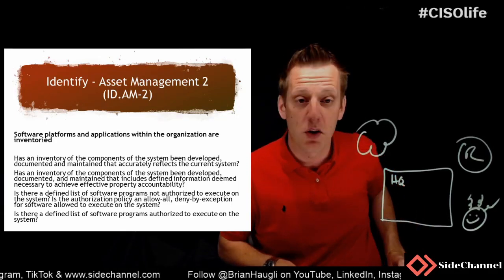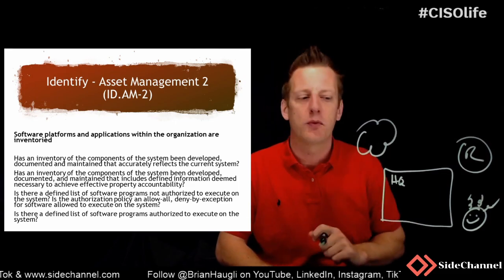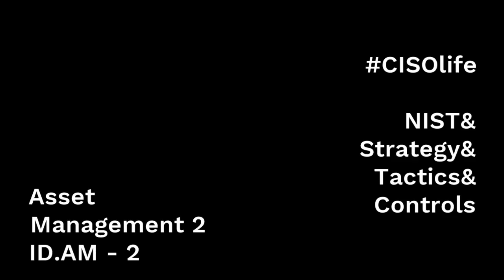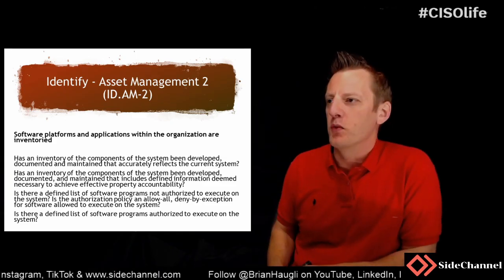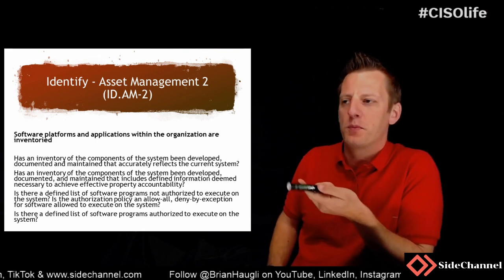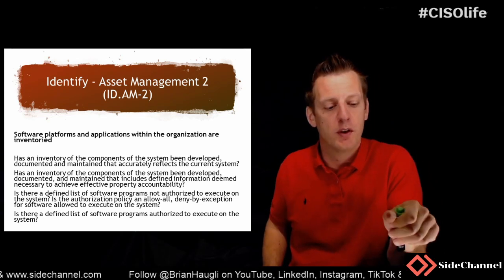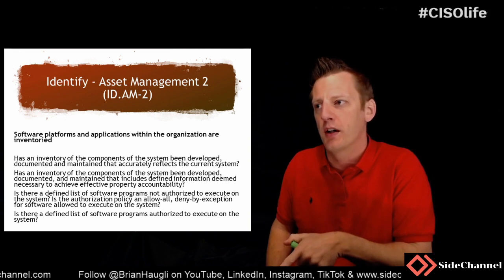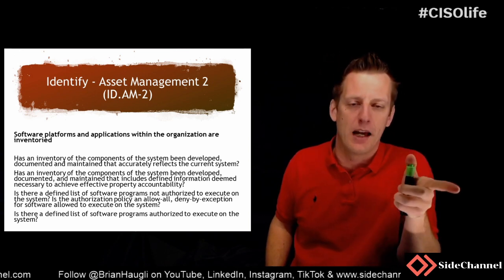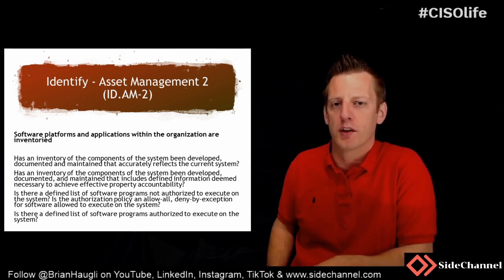The second control underneath asset management within the identify family is software platforms and applications within the organization inventory. Similar to the first control where we were inventorying physical assets, here we're looking at software platforms and applications — do you have them inventoried within your organization?